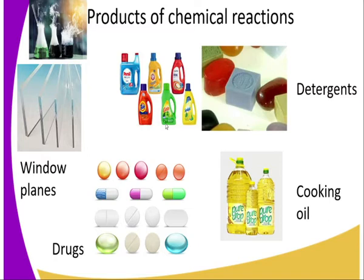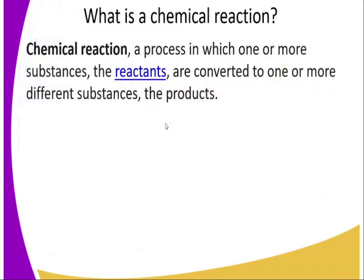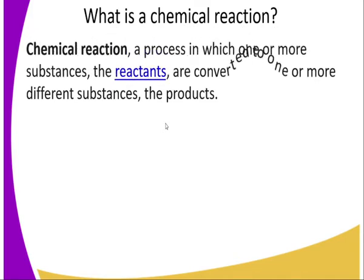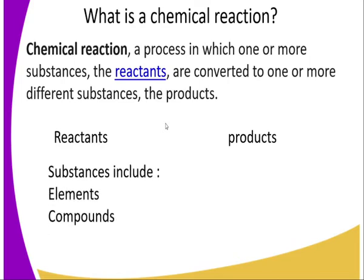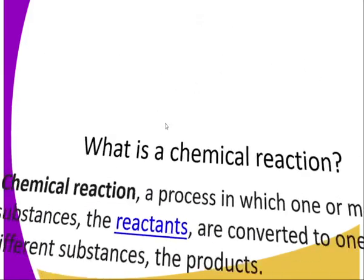So what is a chemical reaction? It's a process in which one or more substances — referred to as reactants — are converted into one or more different substances, referred to as products. In summary: reactants give us products. The substances involved in a chemical reaction are either elements or compounds.